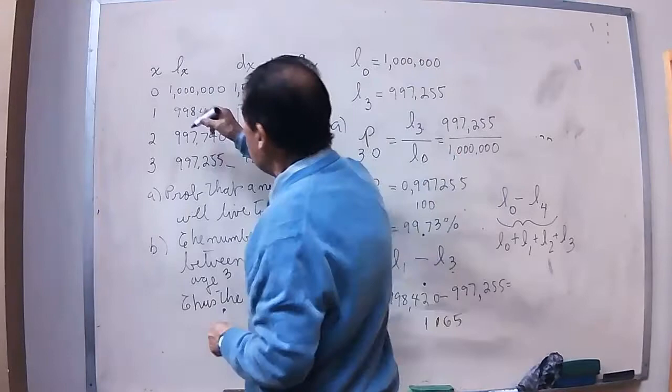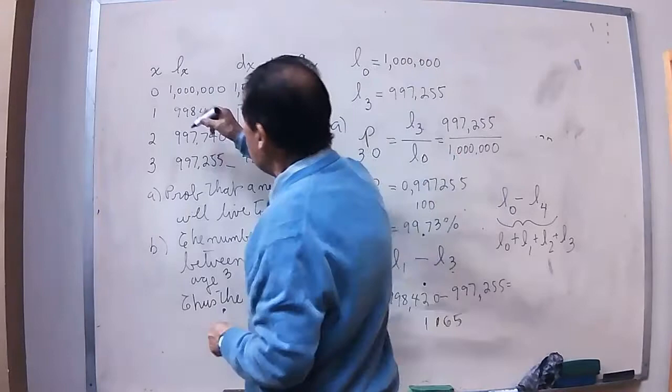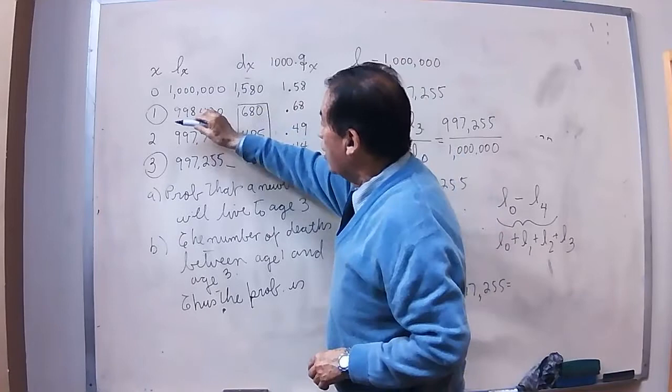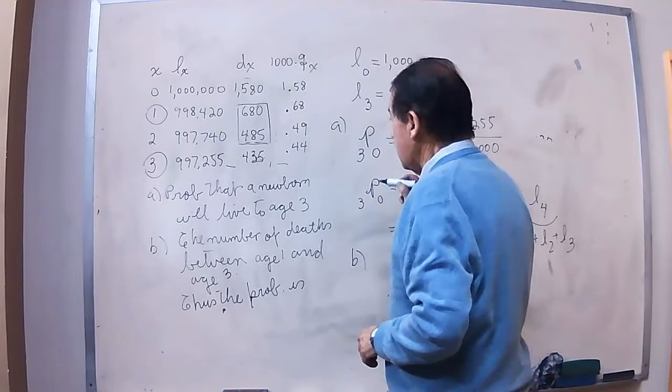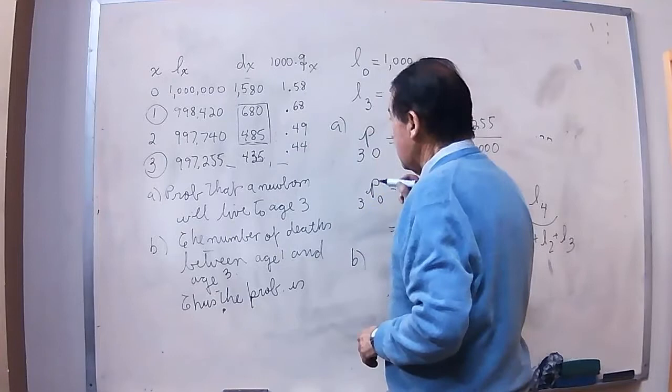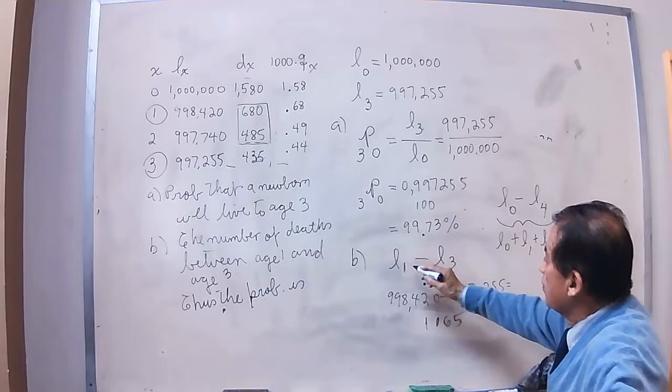The number of people in between which are going to be dying will be 680, which will die at age 1, and 485 persons dying at age 2. So the addition of these two numbers is what we are looking for, but we are looking for it in an equation. The equation will say that we know the persons, living persons, are at L1. In other words, 998,420.